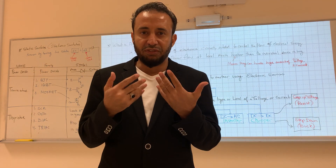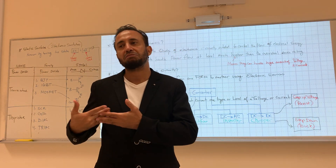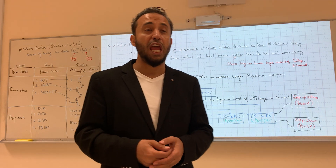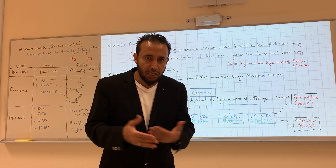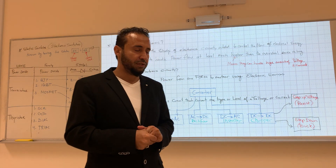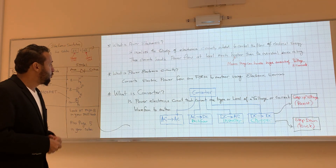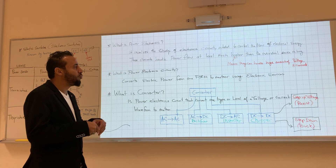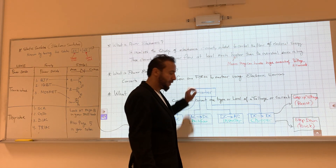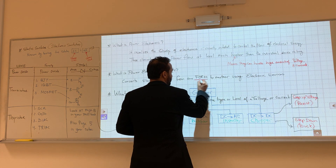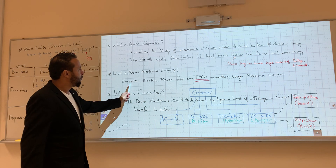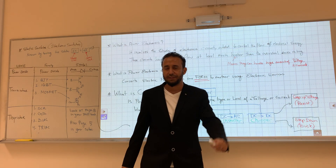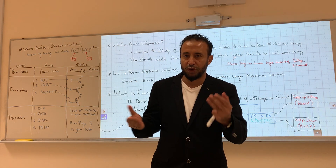In regular electronics you work with five volts, but here we're talking about 120 volts, 220 volts, and much higher voltages and currents. A power electronic circuit converts electrical power from one form to another — underline the word 'converts' — it converts electric power from one form to another using electronic devices.